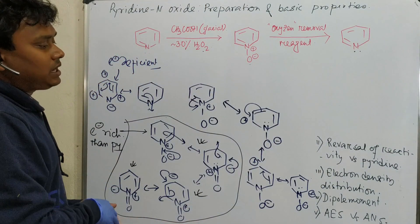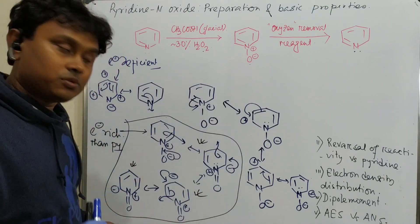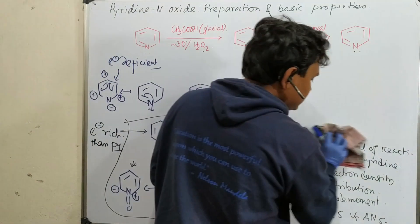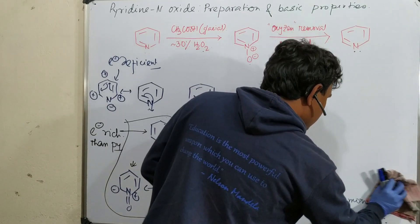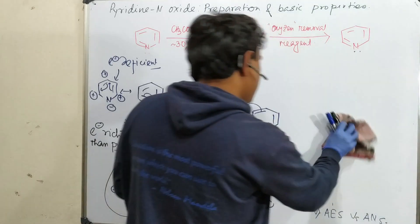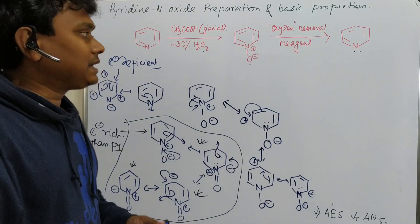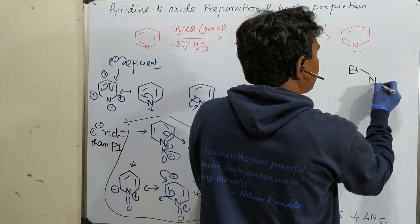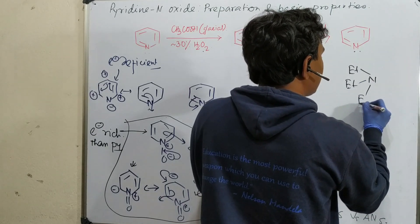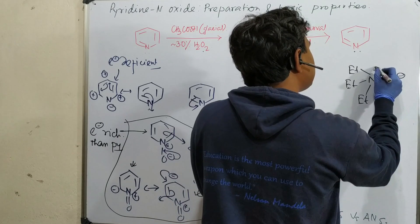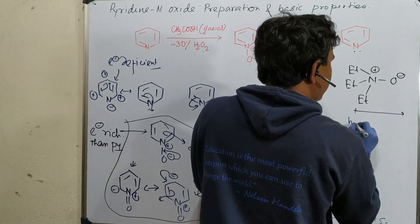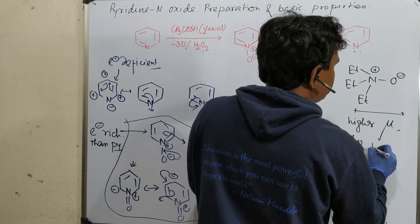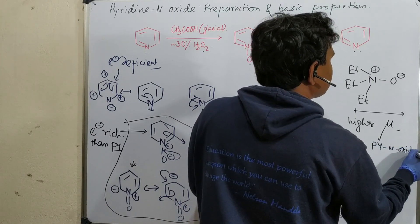Now let's discuss the dipole moment. For comparison, we take triethylamine N-oxide versus pyridine N-oxide. Triethylamine N-oxide, with its O⁻ attached to N⁺, has a higher dipole moment (μ) than pyridine N-oxide.